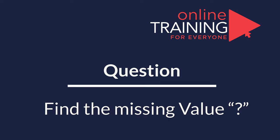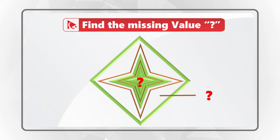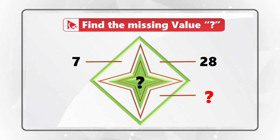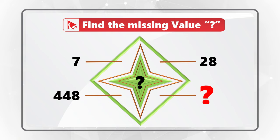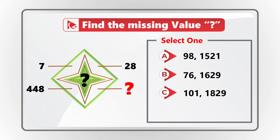Here is an amazing question where you need to find the missing values. Missing values are represented by the question mark and are located on the outside and inside the star, which is hosted inside a diamond. Numbers around the figure are: 7 at 11 o'clock, 28 at 1 o'clock, a missing number at 5 o'clock, and 448 at 8 o'clock. In the center there is also a missing number. Choices are A: 98 and 1521; B: 76 and 1629; C: 101 and 1829; D: 112 and 1792.